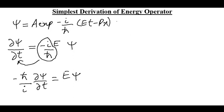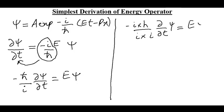On the left hand side we will multiply and divide by iota. That is minus iota multiplied by h bar divided by iota multiplied by iota partial over partial t of psi equals E psi.